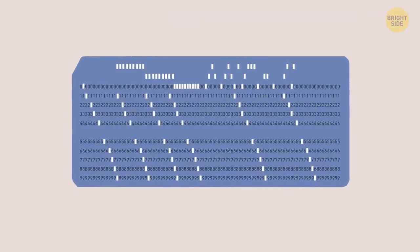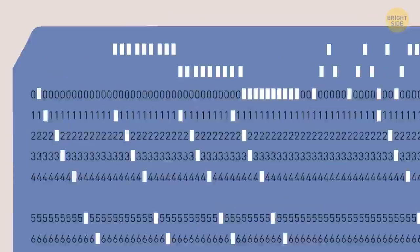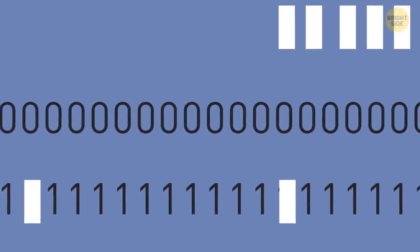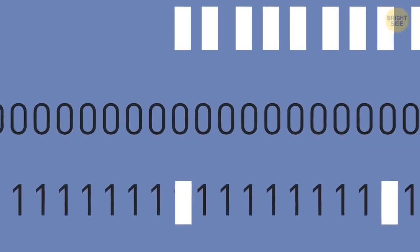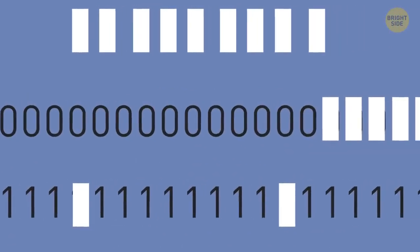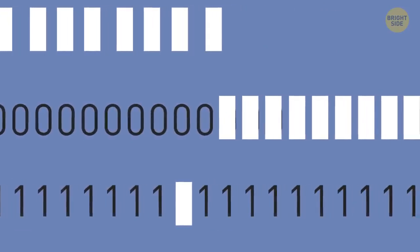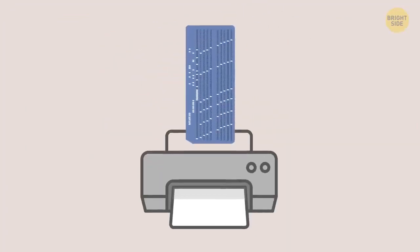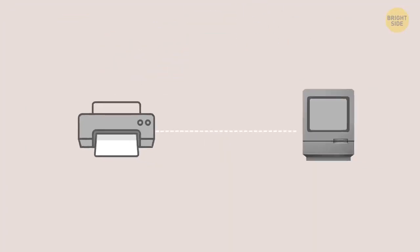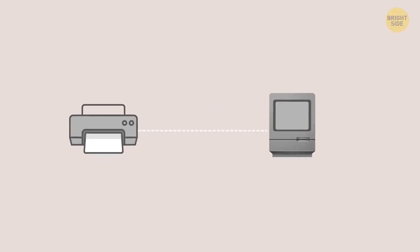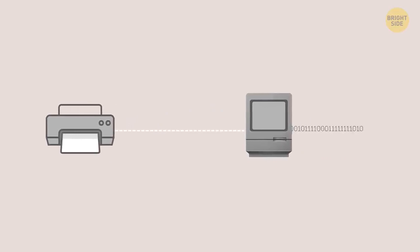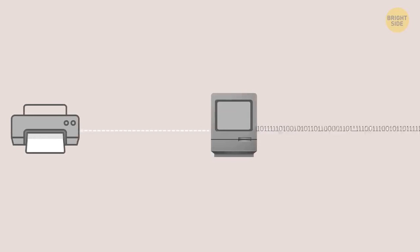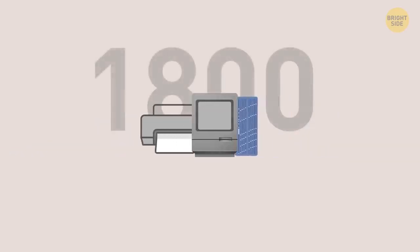One of the first methods to input data was punch cards. Just like a binary code relies on zeros and ones to be read as electrical signals, a punch card system worked by creating holes in paper cards. They were either made by hand or machine and then slotted into a card reader connected to a computer.